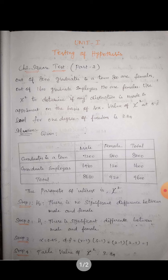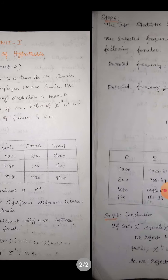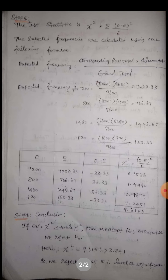For the observed frequency of 7200 (males), we find the expected frequency. The corresponding row total is 8000, the corresponding column total is 8680, divided by the grand total of 9600. This gives an expected value of 7233.33. Similarly, we find all other expected frequencies.